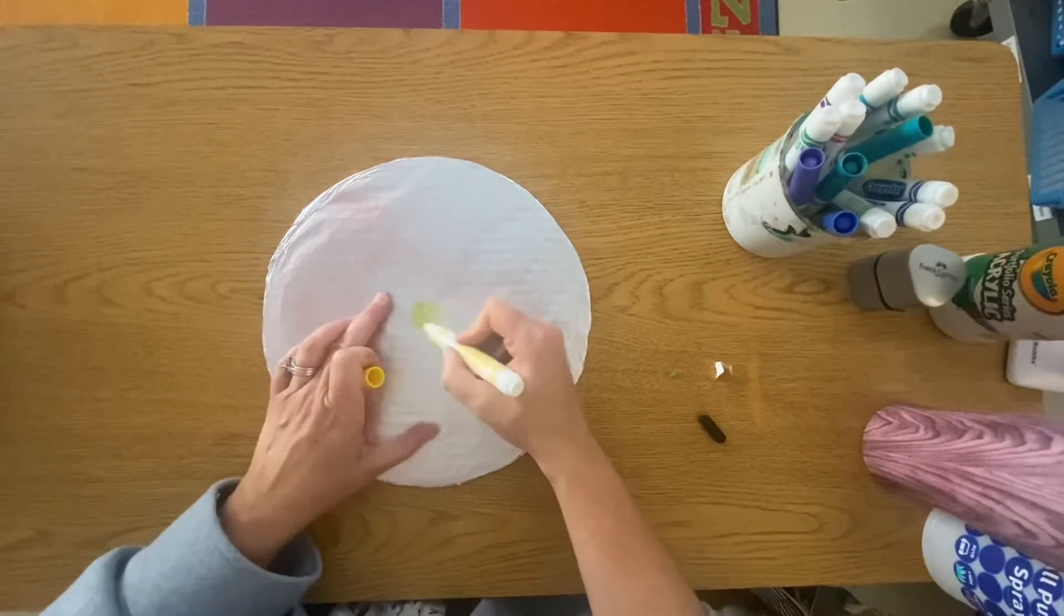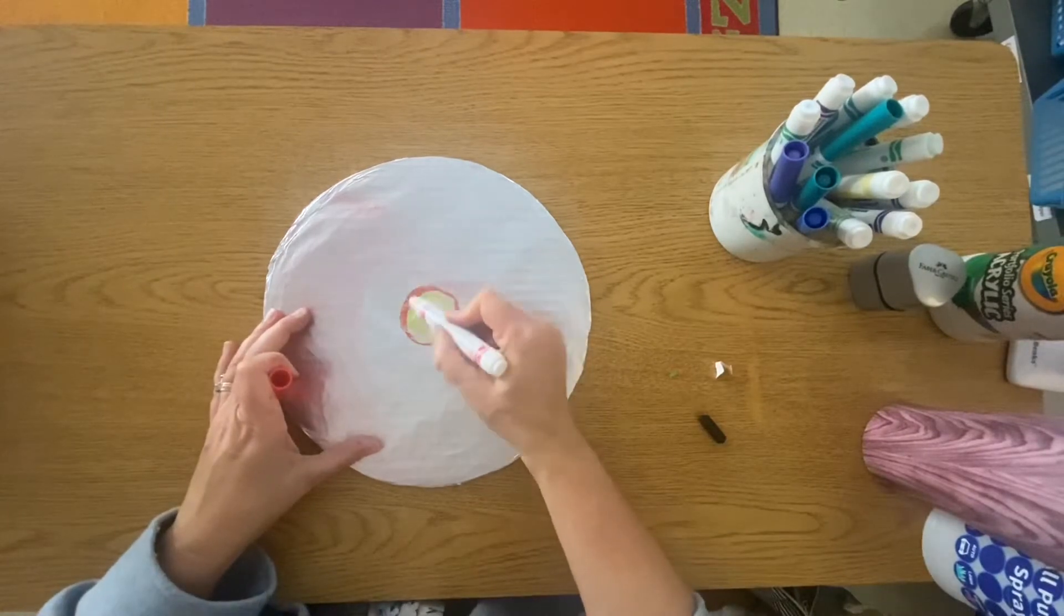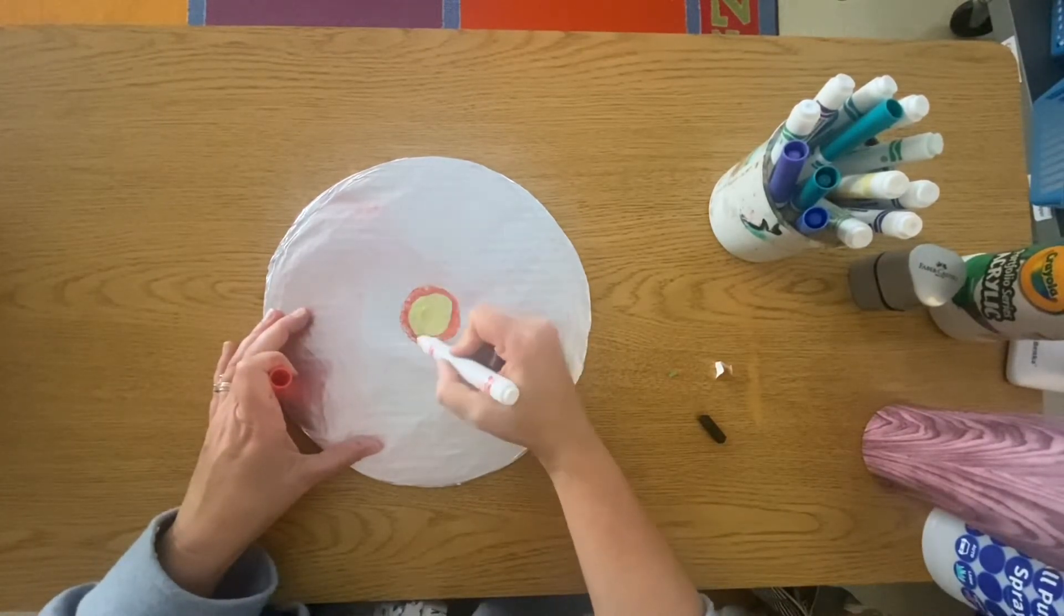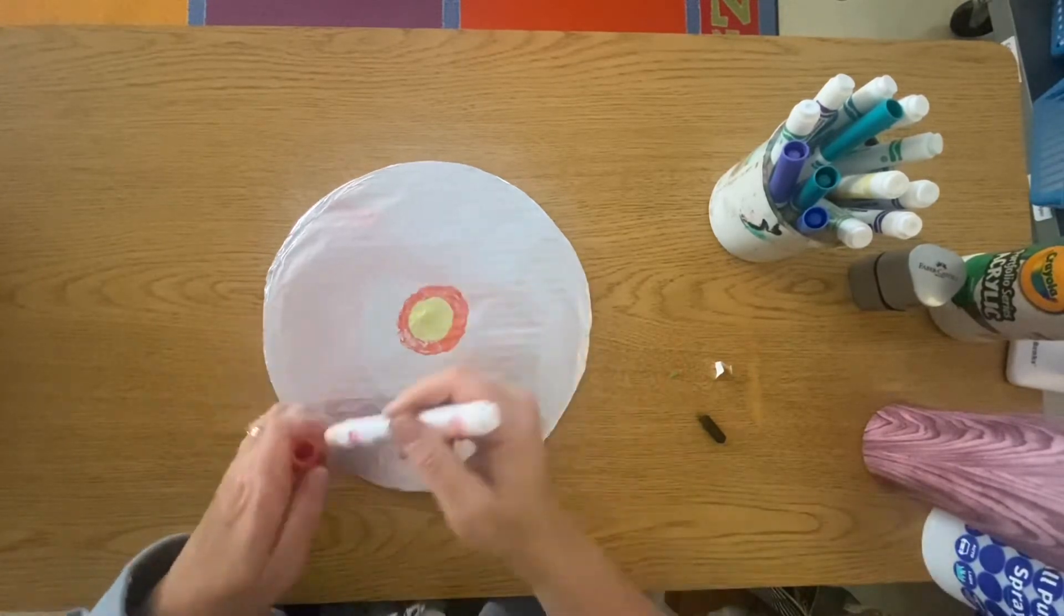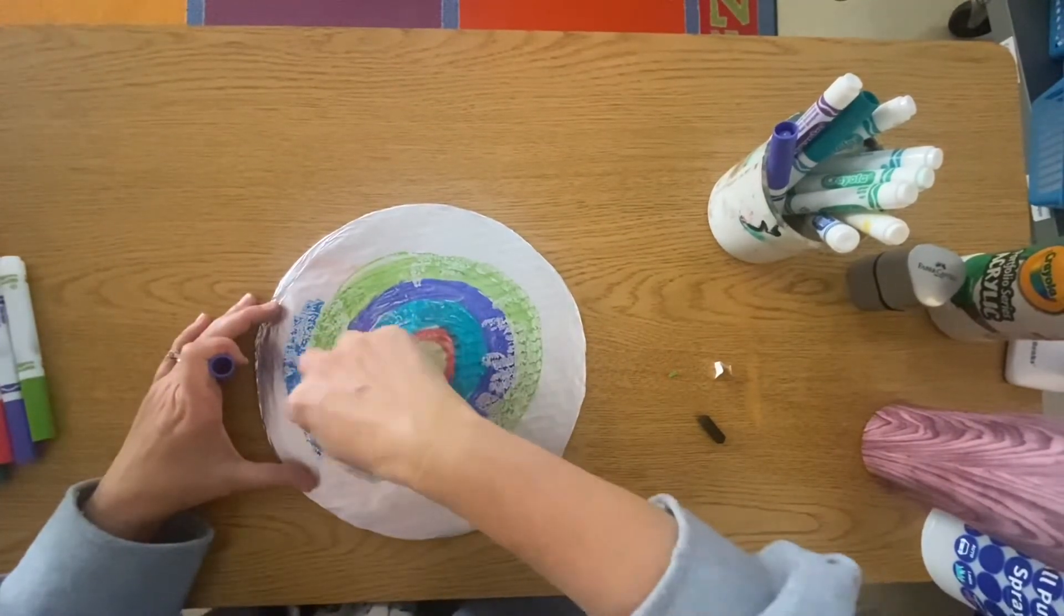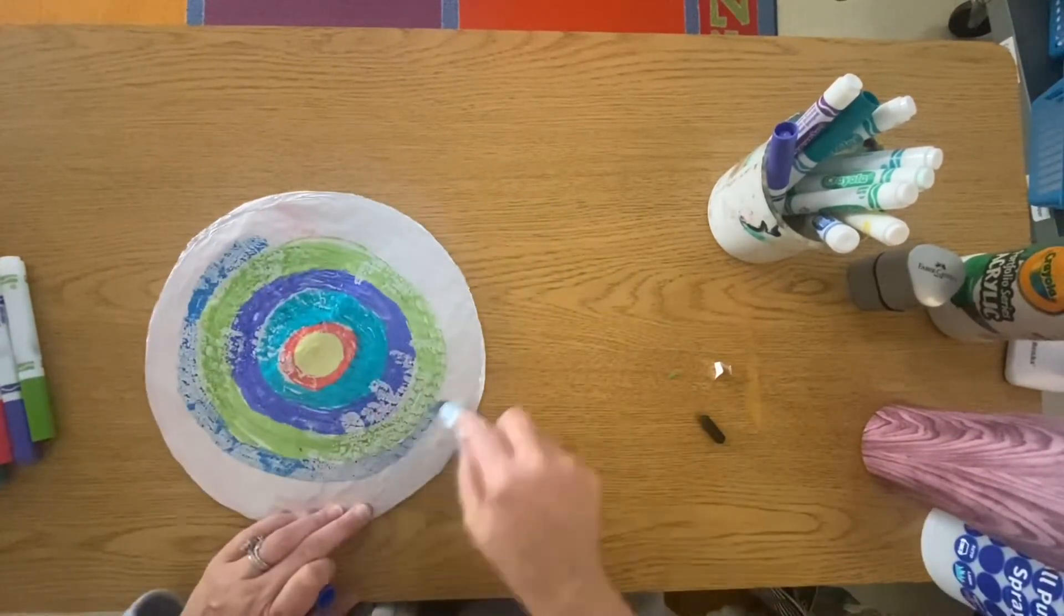You will need your round printing plate and some water soluble markers, so the Crayola markers will work great. Use your markers to create a pattern of concentric circles with varying colors.